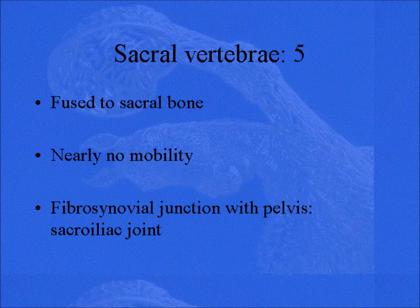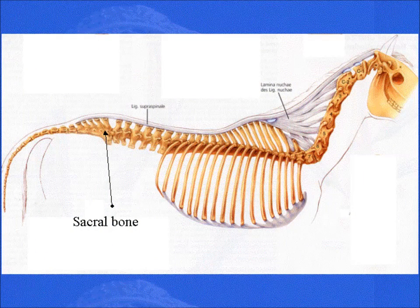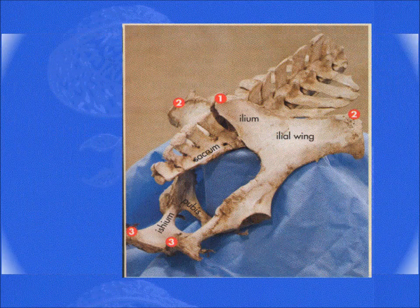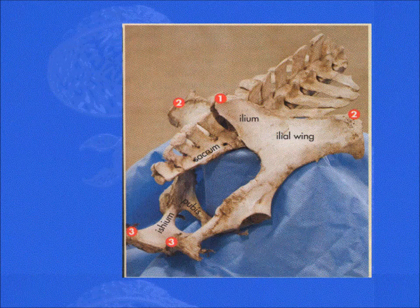The sacral vertebrae — a horse has five of them, and they're fused to the sacral bone. There's nearly no mobility, but it's attached to the pelvic bones, and that really helps in making a lot of connection between the hind legs and the spine. The sacral bone is really like one piece, but it's a very important factor in the entire propulsion for a horse. It has a very important function in propelling the forces from the hind leg through the pelvic bones, to the sacral bone, to the spine.